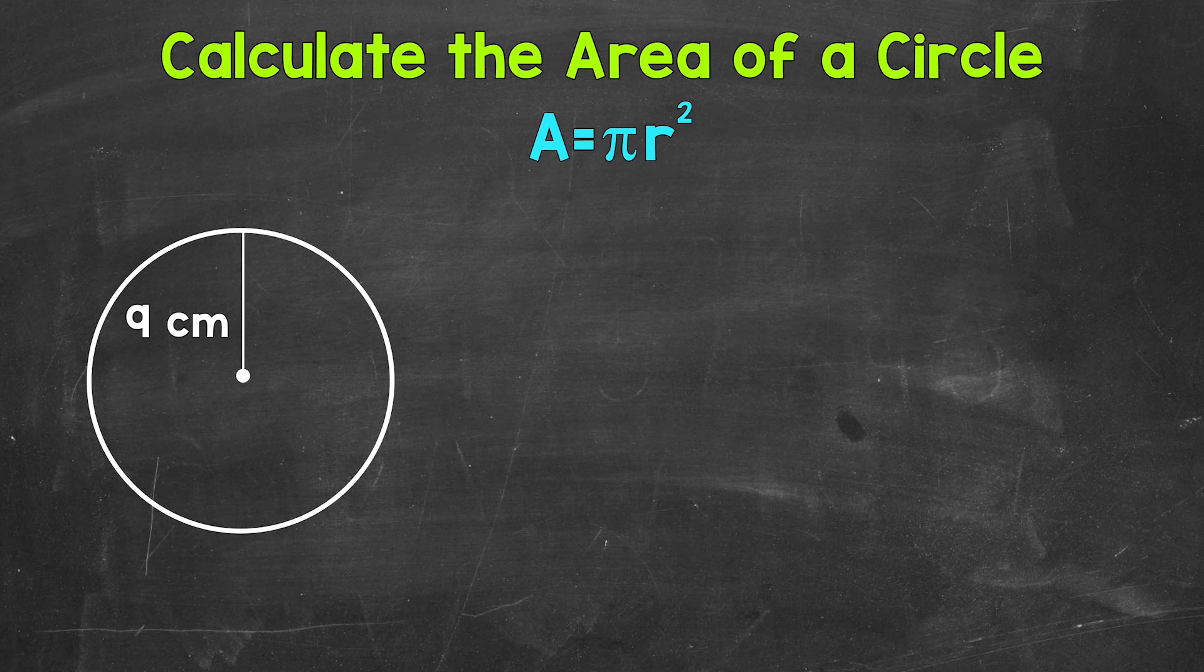And then lastly, before we get into our example, is pi, which is the ratio of a circle's circumference to its diameter. Pi is a constant, so it's the same for all circles. Now pi is irrational. It goes on forever. So we are going to use an approximate or rounded version of pi, 3.14.